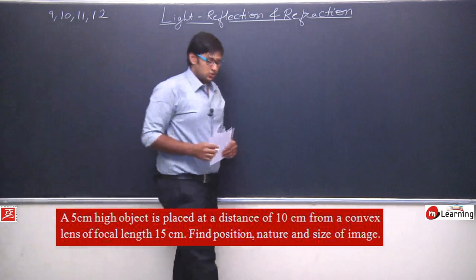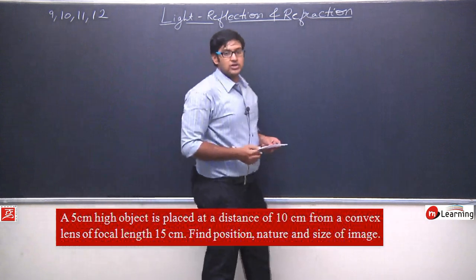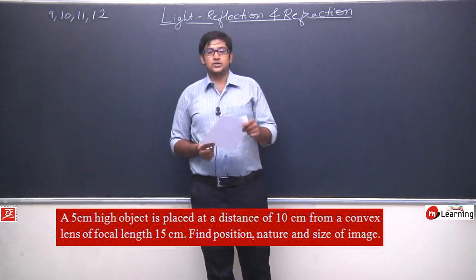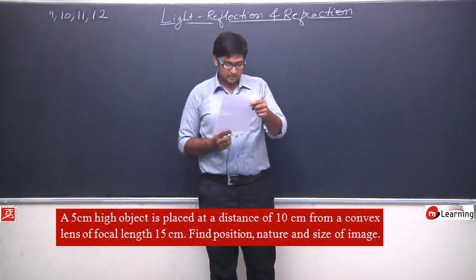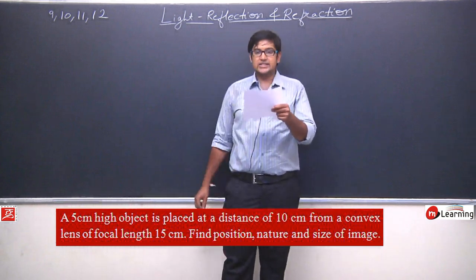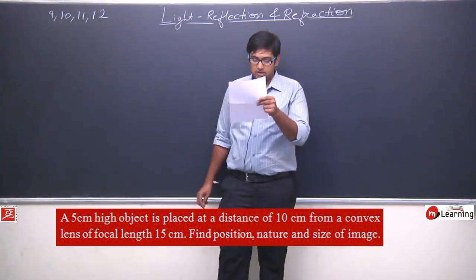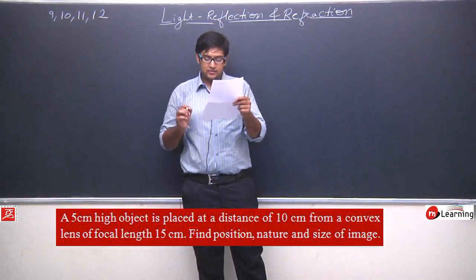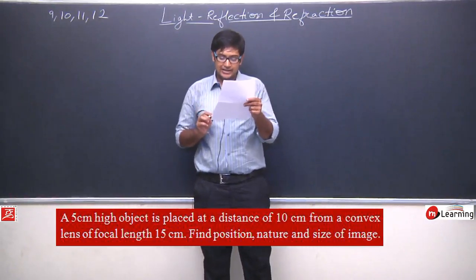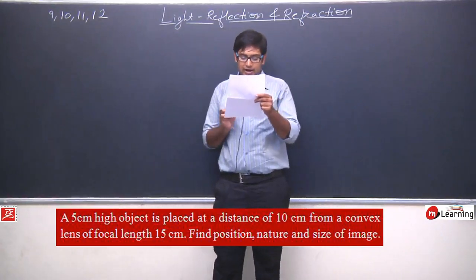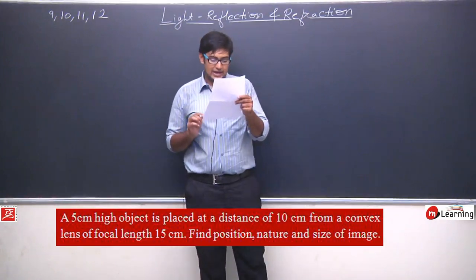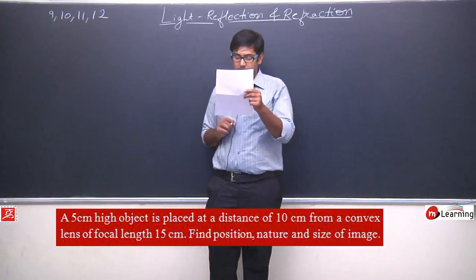We have discussed question number 8. Now we will discuss question number 9. Question number 9 says: a 5 centimeter high object is placed at a distance of 10 centimeters from a convex lens of focal length 15. Find the position, nature and size of the image.